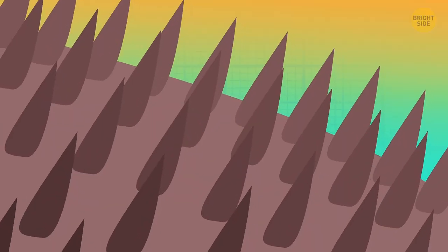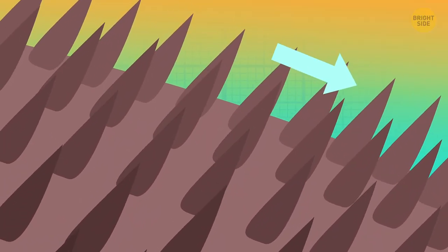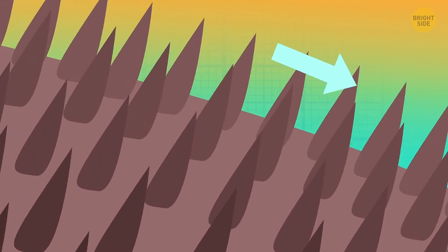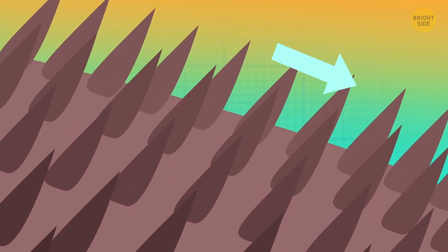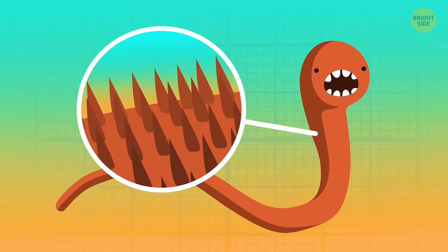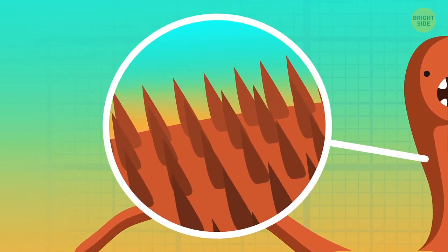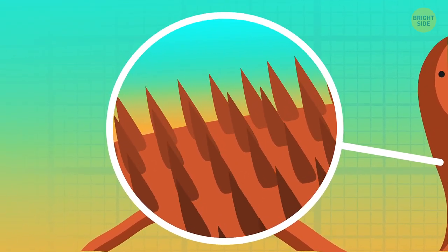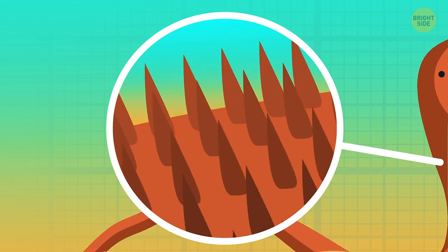Worms are covered with tiny bristles. These bristles help them grip the surface they're on while they push their bodies forward. Without joints, you might have to be covered with bristles too. And since the average person is way larger than any earthworm, your bristles would have to be much bigger.